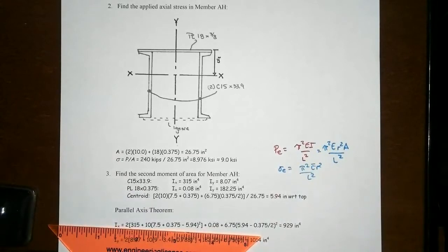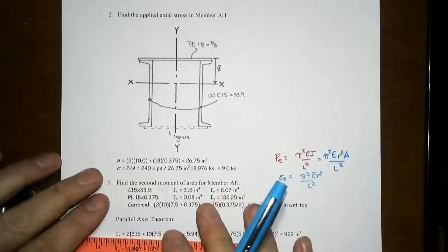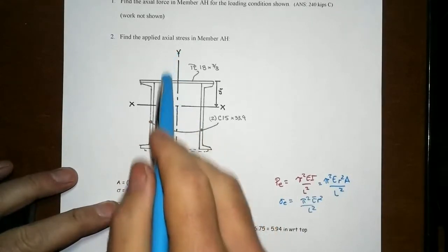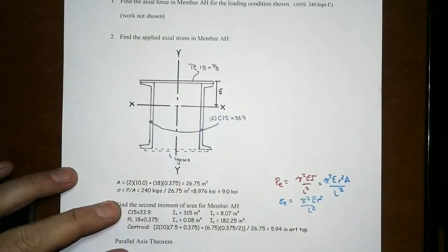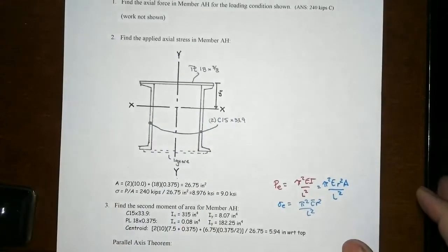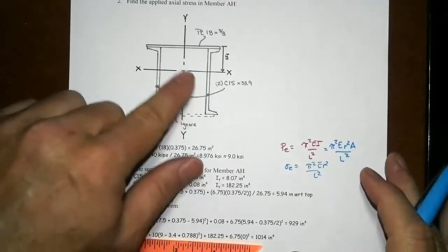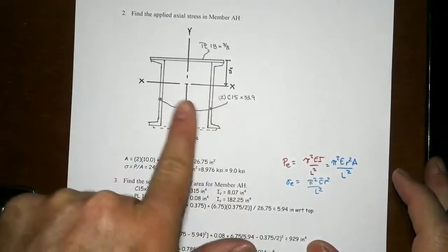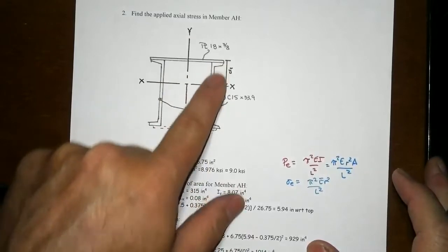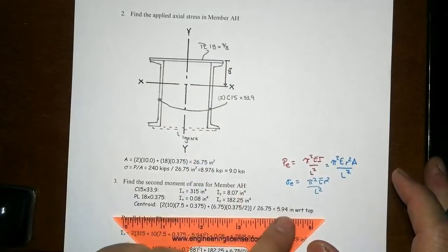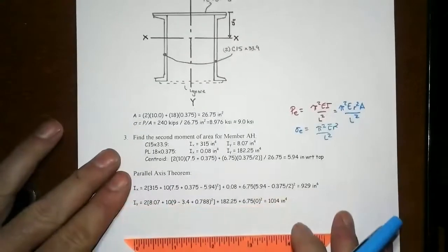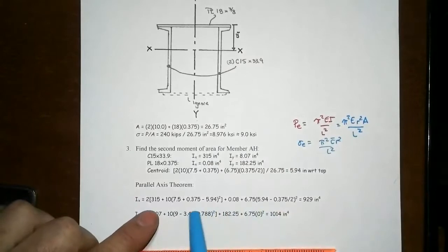The critical thing is we've got to calculate I, the second moment of area. The critical thing then is, does this thing buckle about the y-y axis or the x-x axis? That's influenced by whether I_x or I_y is smaller or larger. We can find where the centroid of the cross section is—it's easy in the y-y because it's symmetric, but we do have to figure out where the centroid is. We find it's 5.94 inches down from the top, and from that we can apply the parallel axis theorem to come up with the appropriate second moments of area.